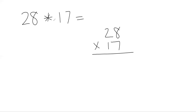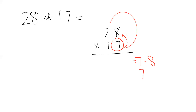We have to keep track of our steps. First I start with the 7 in the ones place times the 8 in the ones place. I'll set up my problems first, then multiply. I stay with my 7 and multiply it by the 2 — but it's actually a 2 in the tens place, so that's 20. So far I've taken the 7 and multiplied it by both digits upstairs.